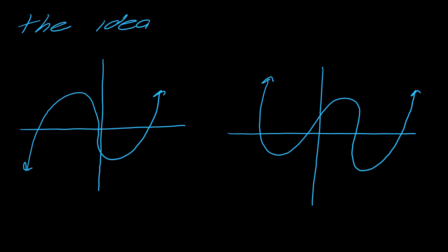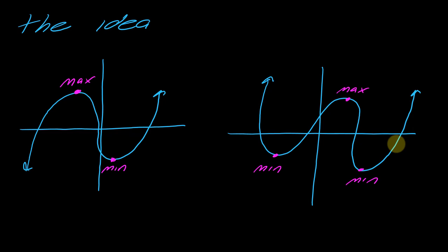You can see on this function here's a local max, here's a local min, another local max, another local min. You can also see this region is concave down, this is concave up — down, up, down, up. If you aren't familiar with those terms, go back and watch those videos first.